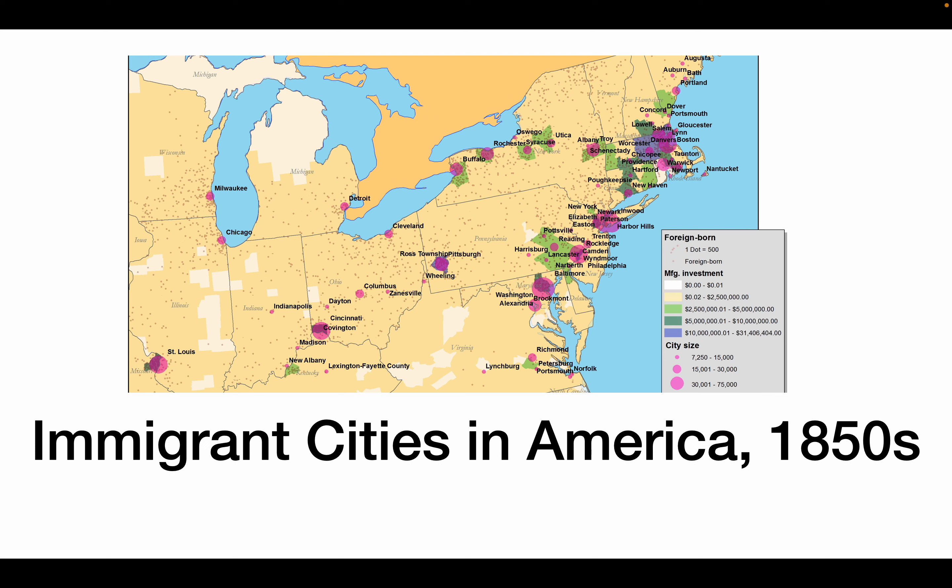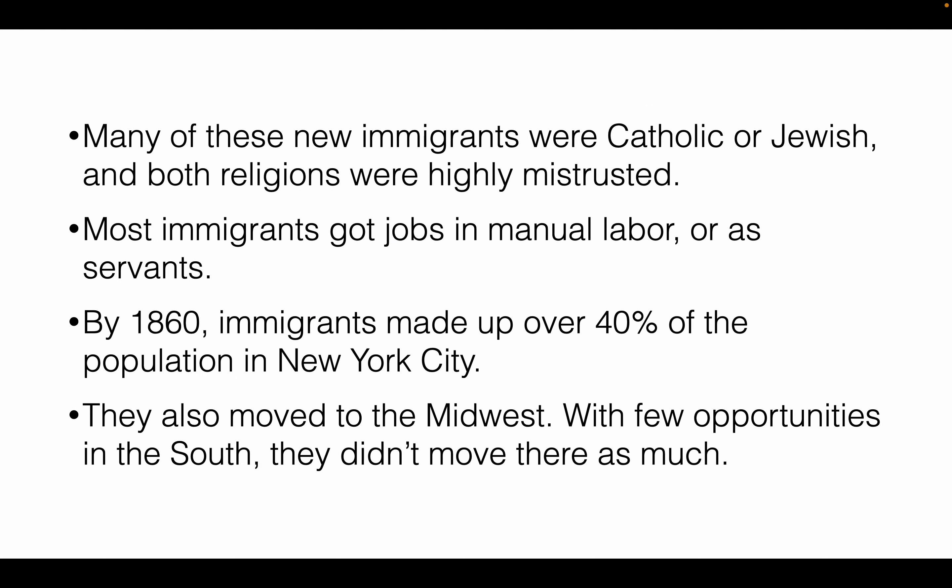You can see immigrant cities in America in the 1850s — St. Louis has a big dot because many Irish and German people came to live there, including the Anheusers and the Busch family. Many of these new immigrants were either Catholic or Jewish, which were not the regular Protestant groups that were expected in America.